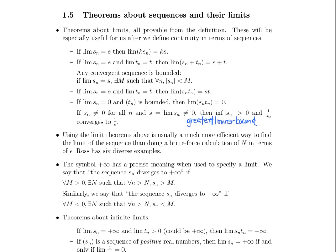We also talk about the symbol plus infinity — it has a precise meaning when we use it to talk about limits. When we say the sequence sₙ diverges to plus infinity, what we mean is: for all M greater than 0, there exists some index N such that for all little n past that big N, those elements are going to be greater than M. So no matter how big a number you give me — a million, a billion, a quadrillion — there exists some index number such that all elements in the sequence past that index are greater than that number.